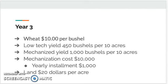Year three. Your wheat is now $10 per bushel. Low-tech yield is 450 bushels per 10 acres. If you've mechanized, your yield is 1,000 bushels per 10 acres. Mechanization costs $10,000, and if you're on yearly installments, you're paying $1,000 per year. Land costs $20 per acre. Take your time, figure out what you're going to do.